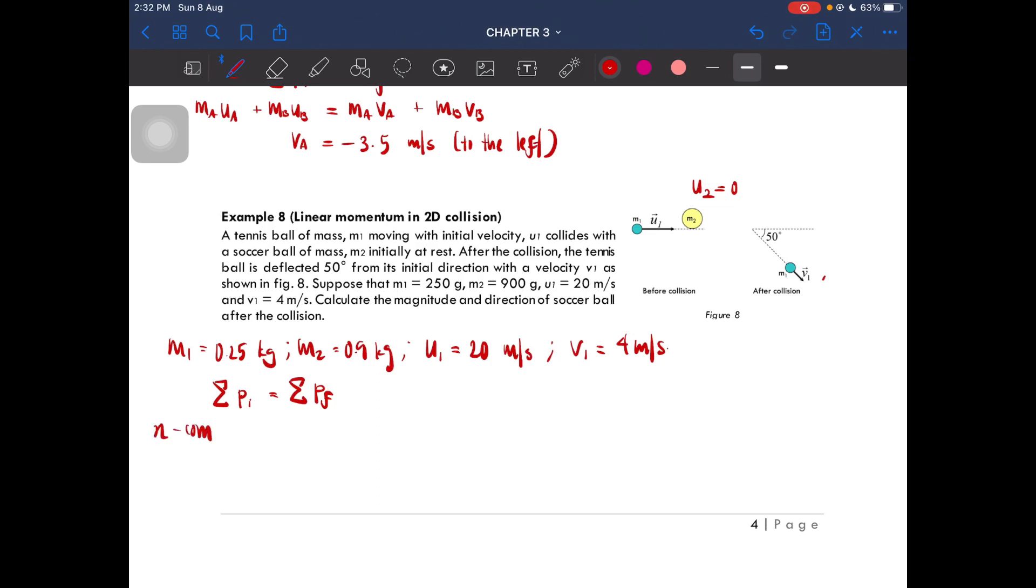At x-component, we have p initial at x-component, so we have m1·u1x + m2·u2x equals m1·v1x + m2·v2x. U2x is for this ball, and after the collision we still have to see the final velocity of v1 in the x direction as well as this one in the x direction.